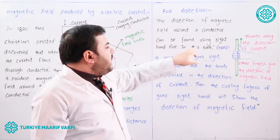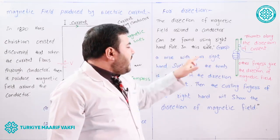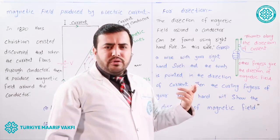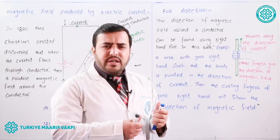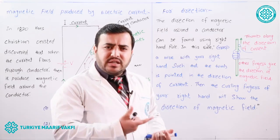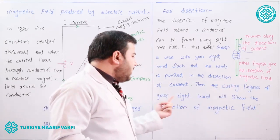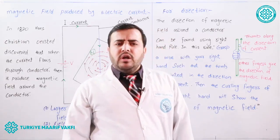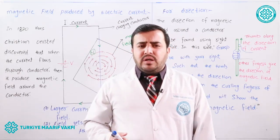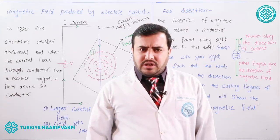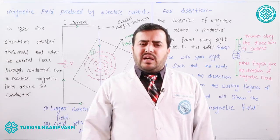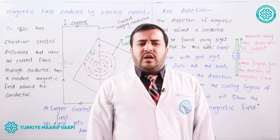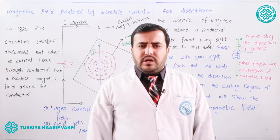So the right hand rule is stated as: grasp the wire with your right hand such that the thumb points in the direction of the current; then the curling fingers of your right hand will show the direction of the magnetic field. This was all about the magnetic field produced around a current-carrying conductor. If you have any questions, you can ask in the comments below. Until next session, have a good time and take care of your health. Thank you.